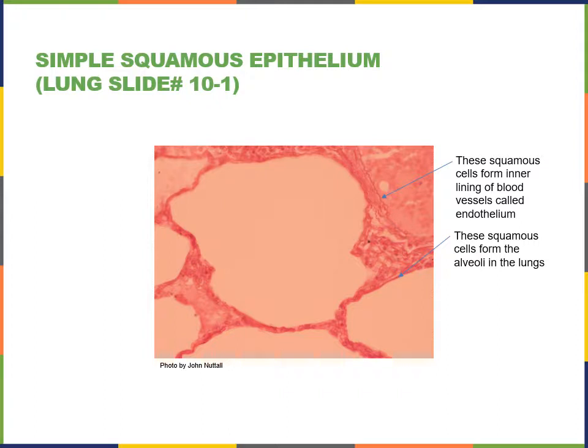Here we can see an example of a simple squamous epithelium in the lung. The air sacs of the lung, called alveoli, are formed from simple squamous epithelium. And the inner lining of blood vessels, called endothelium, is also formed from a simple squamous epithelium.